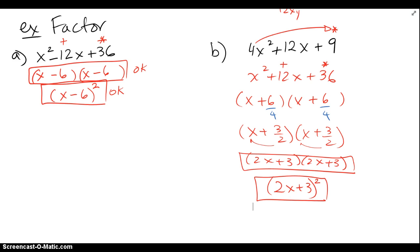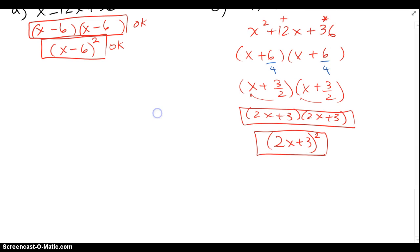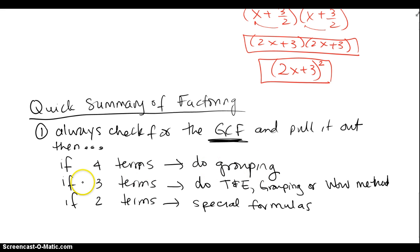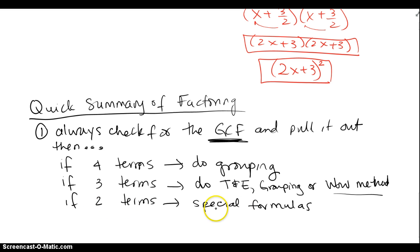A quick summary of factoring: The very first step is always check for the GCF and pull it out. Then, if you see four terms, most likely it's a grouping problem. If you see three terms, you can do trial and error, the grouping method, or the AC method. If you see two terms — especially squares and cubes — it's probably going to be one of these special formulas: difference of squares, sum of cubes, or difference of cubes.